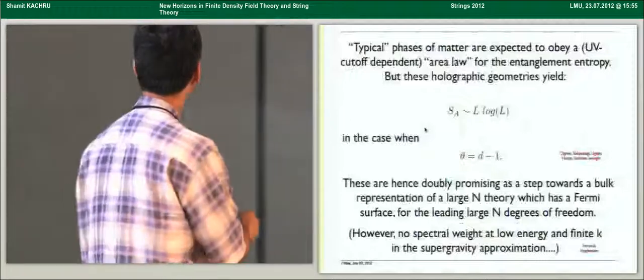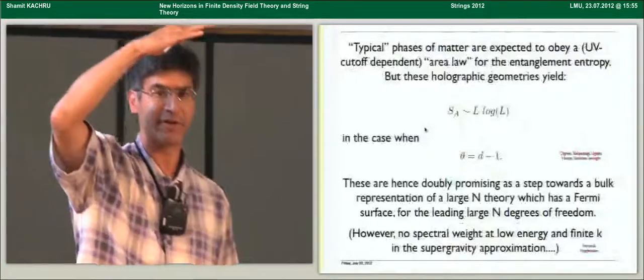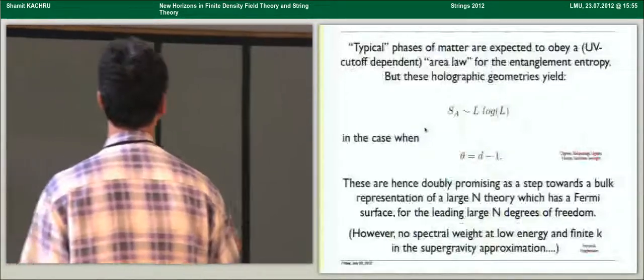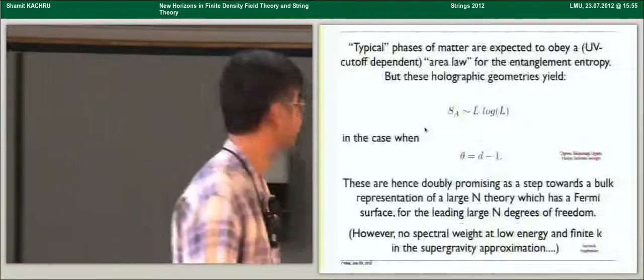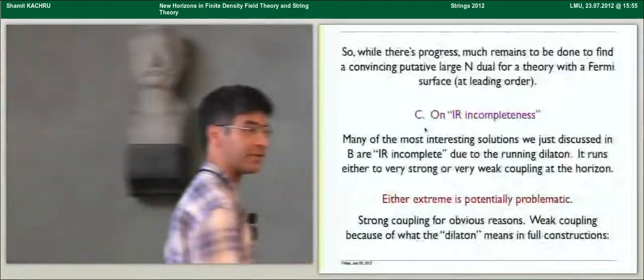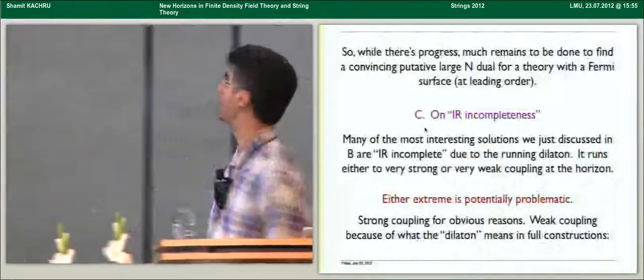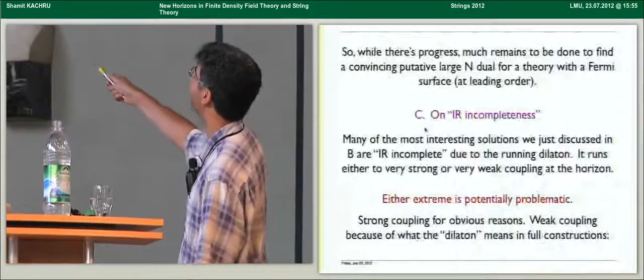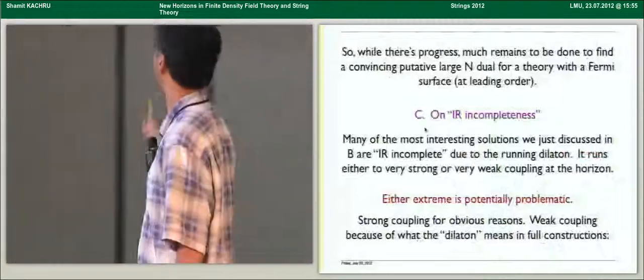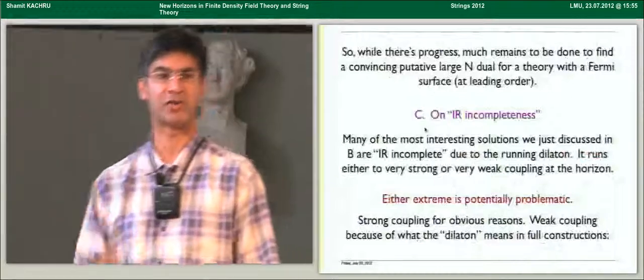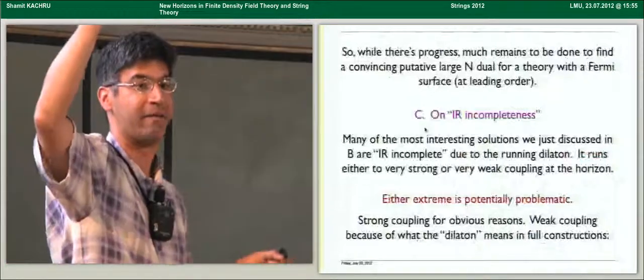Now, to be pessimistic, one of my colleagues Hartnoll and a student at Stanford have actually gone and looked for spectral weight at low energy but finite momenta in these geometries, and in the leading supergravity approximation, there is no such spectral weight. So if there is such spectral weight, it has to be a sub-leading effect not visible in supergravity. Such spectral weight would be expected, of course, at the Fermi surface. So the summary of this part of my talk is that while there's progress, I think a lot remains to be done to find a convincing putative large N dual for a theory with a Fermi surface, Fermi liquid or not, at leading order. And until then, we'll be in this situation where we're studying 1 over N tails that are being wagged by an N leading dog that's quantum critical and has no analog in the real materials.